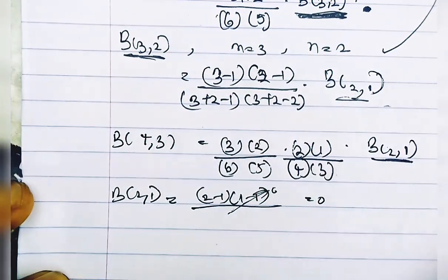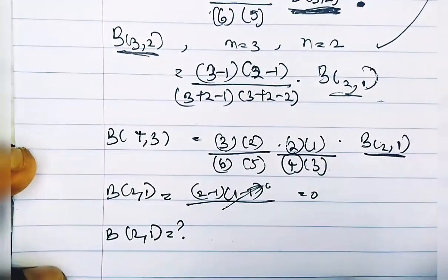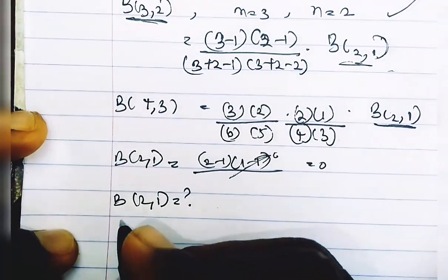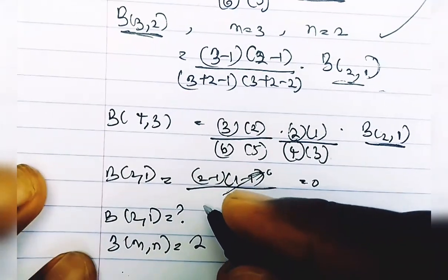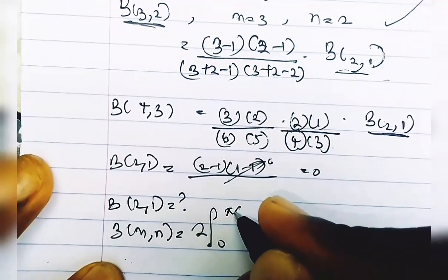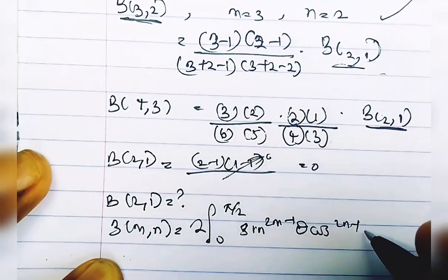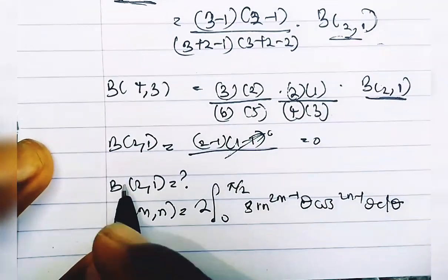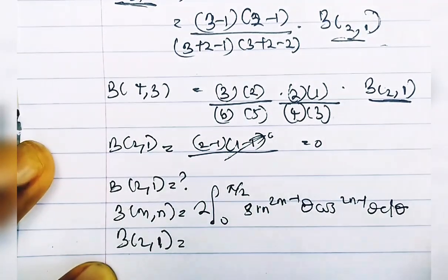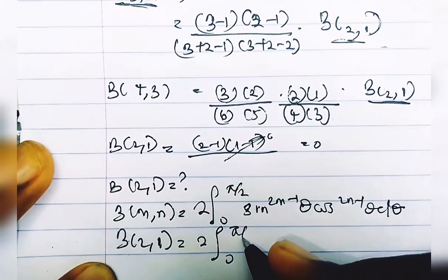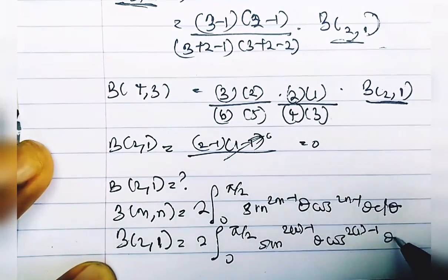Since we are looking for B(2, 1) to substitute into our equation, we use the integral definition: B(m, n) = 2 · ∫₀^(π/2) sin^(2m−1)(θ) · cos^(2n−1)(θ) dθ. So B(2, 1) with m=2 and n=1 equals 2 · ∫₀^(π/2) sin^(2·2−1)(θ) · cos^(2·1−1)(θ) dθ.